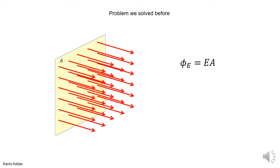In the last problem we showed how to get the electric flux through a plane such that the electric field was perpendicular to the plane and it was uniform, and we got the result that the electric flux is equal to the electric field times the area. The concept of electric flux can be thought of as similar to the concept of the number of electric field lines going through the surface.